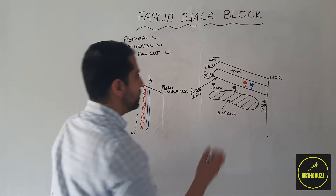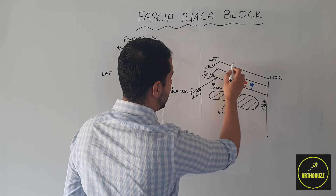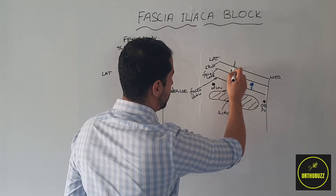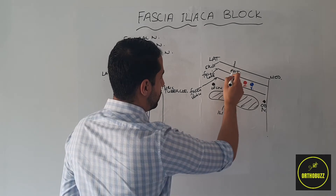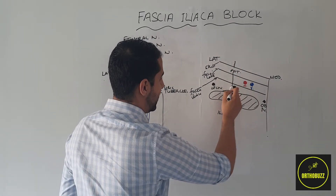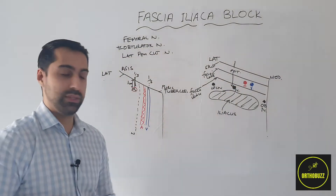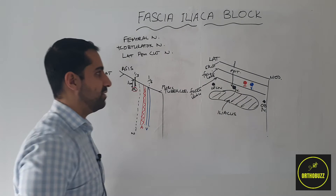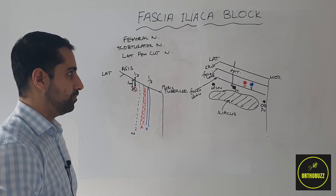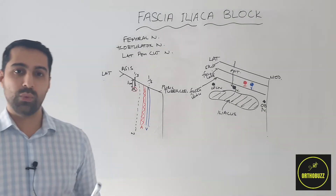When we put our needle in at the one-third to two-third boundary between the lateral and medial sides, we inject our needle through the skin, through the fascia lata, and then through the fascia iliaca into this compartment — which is separate to the compartment that the artery and vein are in, between the fascia lata and the fascia iliaca. This helps to explain how we administer the block.